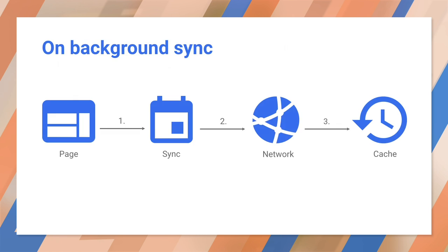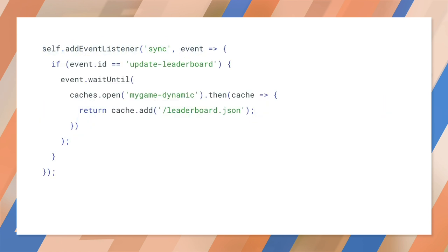Background Sync is another feature built on top of Service Worker. It allows you to request background data synchronization as a one-off or at fixed intervals, even when the user doesn't have a tab open to your site — only the Service Worker is woken up. This is ideal for non-urgent updates, especially those that happen so frequently that a push message for every update would be too much — for example, social timelines or news stories. As you can see in the code, you listen for the sync event and then, in this example, synchronize leaderboard data for a game.